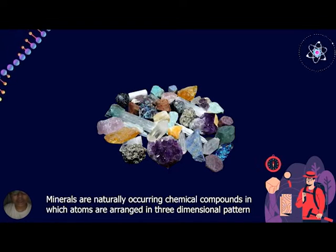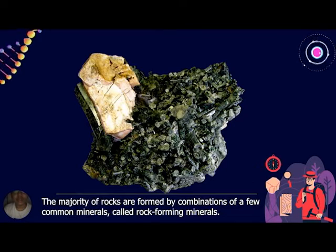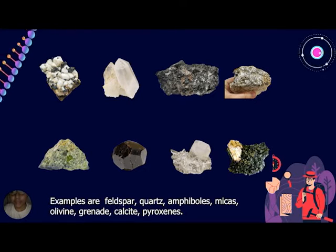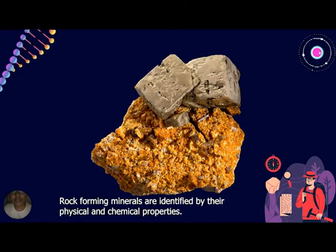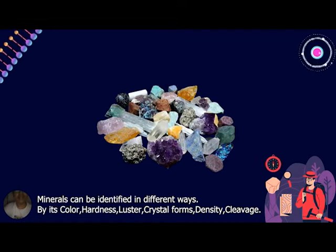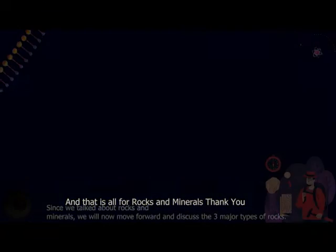Minerals are naturally occurring chemical compounds in which atoms are arranged in a three-dimensional pattern. The majority of rocks are formed by a combination of a few common minerals called rock-forming minerals. Rock-forming minerals are identified by their physical and chemical properties. Minerals can be identified in different ways: by color, hardness, crystal forms, density, and cleavage. And that's all for rocks and minerals.